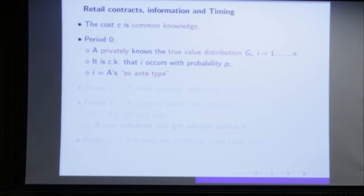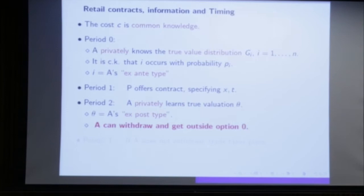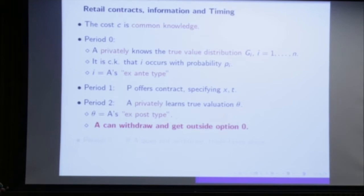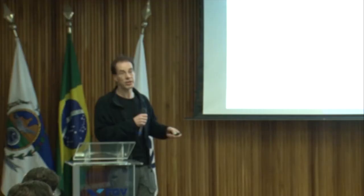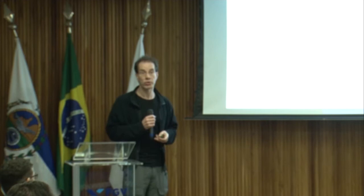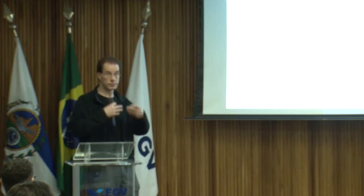In period one, the principal offers a contract specifying a menu of combinations (X, T). Then after concluding the contract over the internet, I get my jeans sent home, open the package, try them on, and I really learn whether they fit — I learn my real theta. Theta is the ex-post type, my real valuation, and this is private information: the principal does not see whether the jeans fit. The new element compared to Courty and Li, shown in bold red: the agent can simply withdraw after learning his ex-post type and get his outside option of zero — send the good back, cancel the contract, and get a full refund.